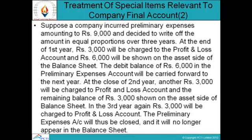For example, suppose a company incurred preliminary expenses of ₹9,000 and decided to write off the amount in equal proportions over three years. At the end of the first year, ₹3,000 will be charged to the P&L account and ₹6,000 will be shown on the asset side of the balance sheet. At the close of the second year, another ₹3,000 will be charged to P&L and ₹3,000 remains on the asset side. In the third year, the remaining ₹3,000 is charged to P&L, closing the preliminary expense account entirely.